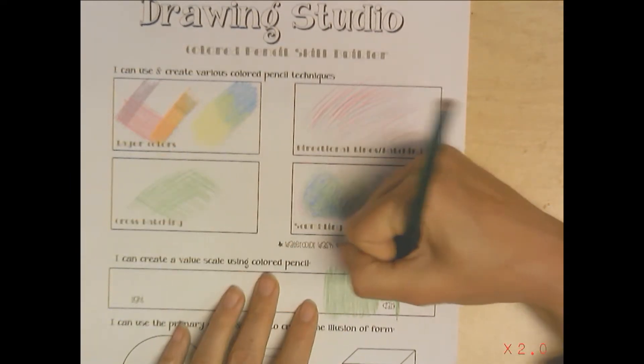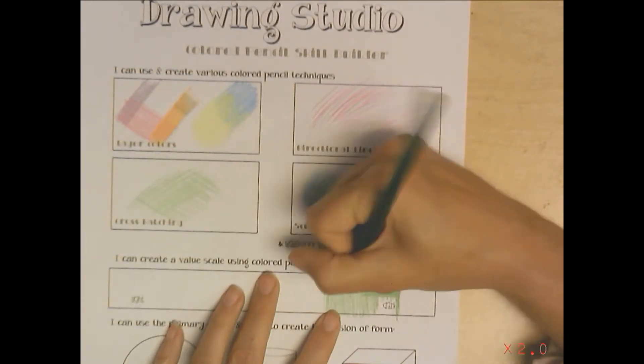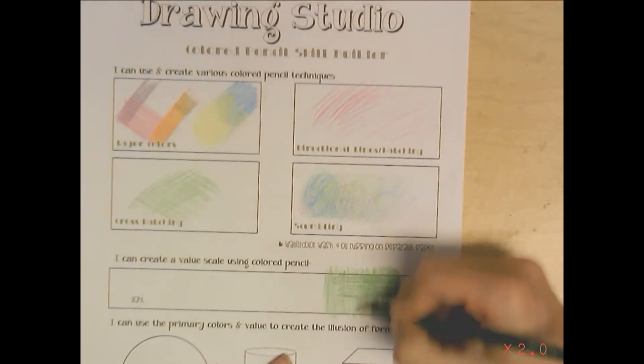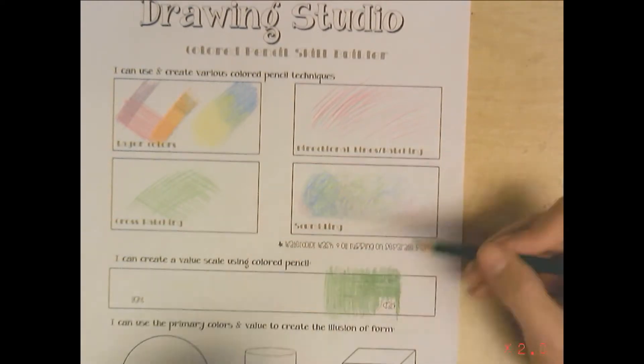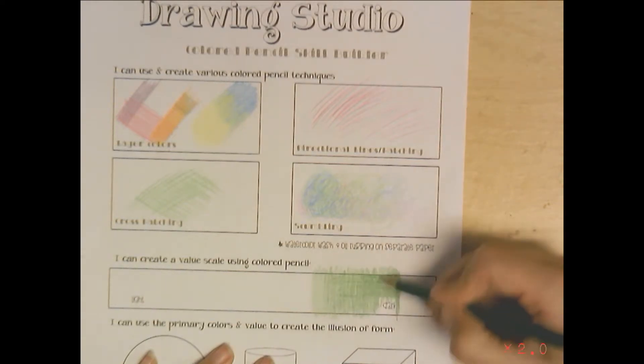You want to layer with the same color. Up here we layered with different colors. I can go in a different direction, go on top, and that's making all this look even darker. I can layer multiple times as long as I have to, to get it as dark as I want. What you don't want to do is press so hard you break your pencil - that's not proper technique. You get it as dark as you need to get it by layering.